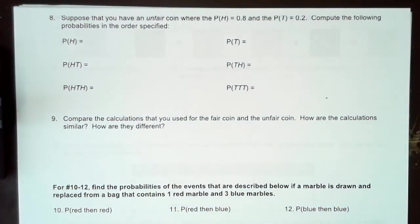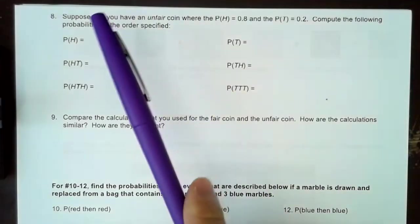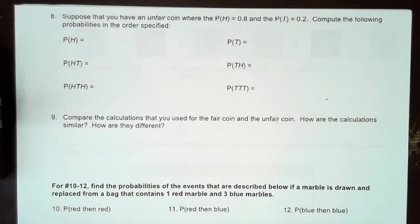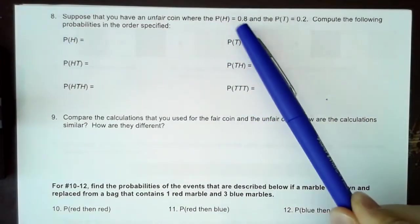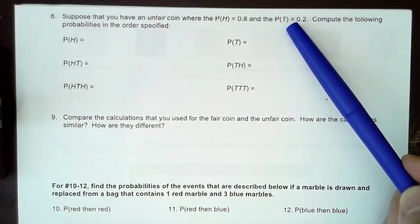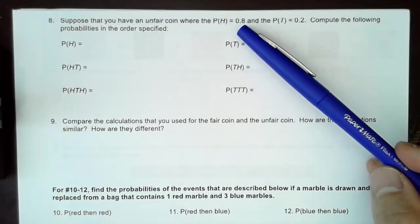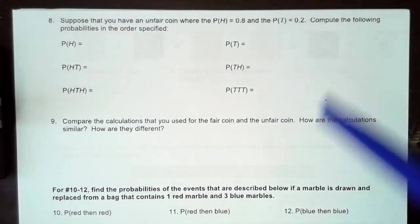Okay class, now that we are familiar with what a compound event is, we are going to practice an example where the coin is not fair. Suppose that you have an unfair coin where the probability of heads is 0.8 and the probability of tails is 0.2 — essentially saying that the probability of heads is 80% and the probability of tails is 20%.